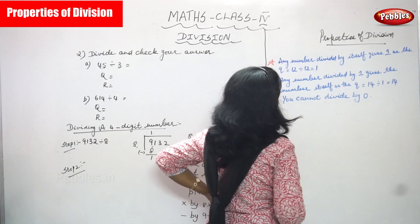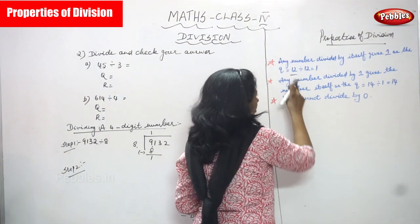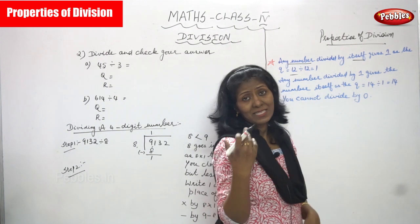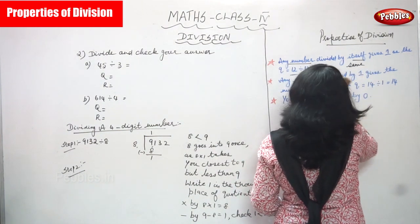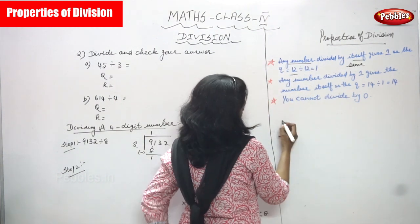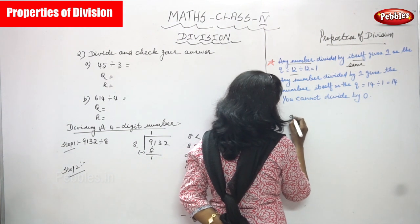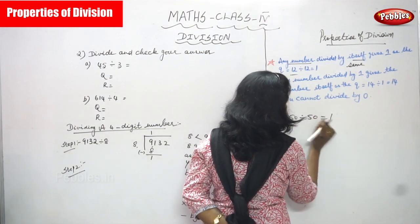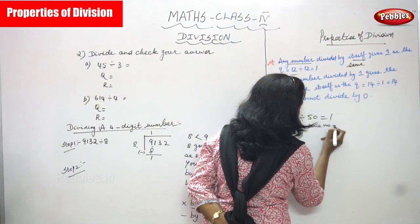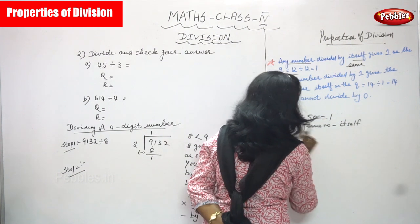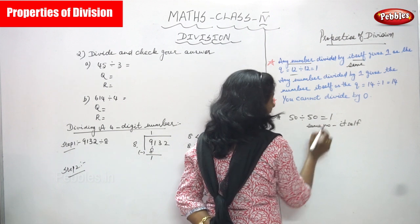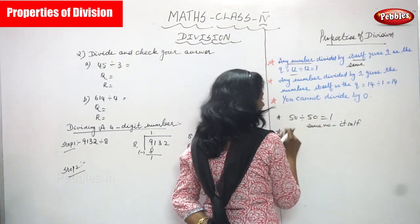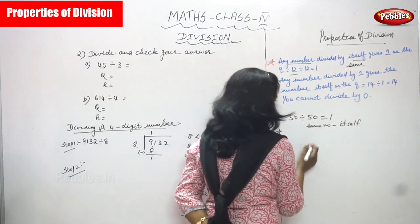Any number — I'm taking 12 as an example — divided by itself means the same number. So 12 divided by 12 gives 1 as the quotient. Another example: 50 divided by 50 gives 1. Any number divided by itself — the same number — gives 1 as the quotient.